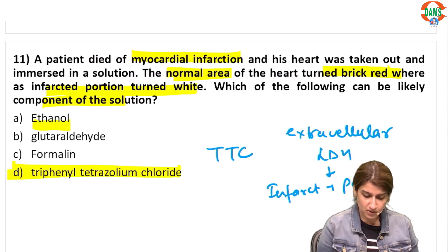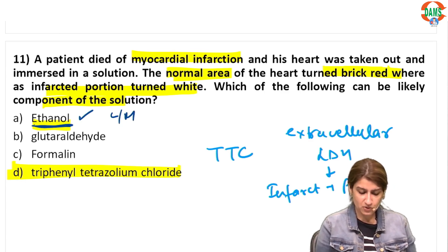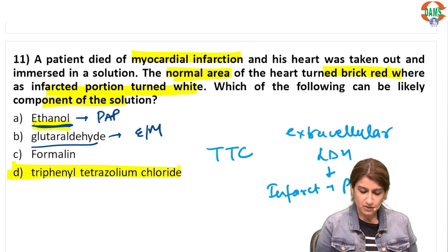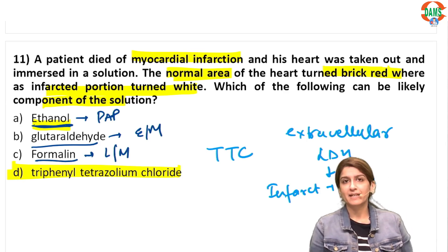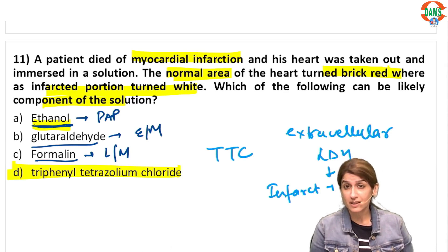Regarding fixatives: ethanol is used as a fixative for pap smearing and light microscopy; glutaraldehyde is used as a fixative for electron microscopy; and formalin is used for light microscopy. These are important fixatives to remember.